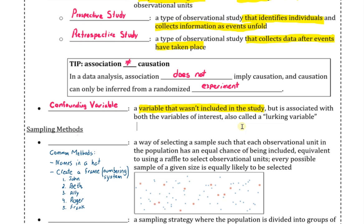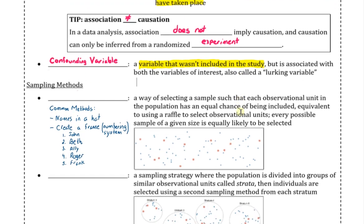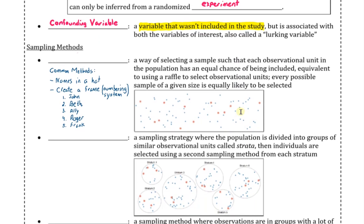Now let's talk about how we actually collect our data and discuss some of the common sampling methods we will see. One of the most common sampling methods we will see is referred to as a simple random sampling. This is a way of selecting a sample such that each observational unit in the population has an equal chance of being included. This is equivalent to using a raffle system to select your observational units. Other common methods that people use are to put people's names on paper and then put all the pieces of paper in a hat. Then you can imagine randomly drawing out a couple of these names and that would be how you create your sample.